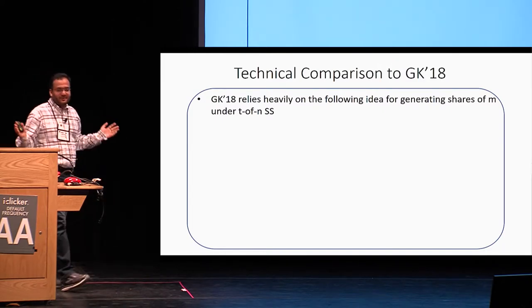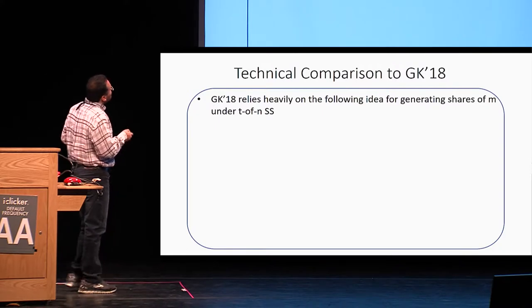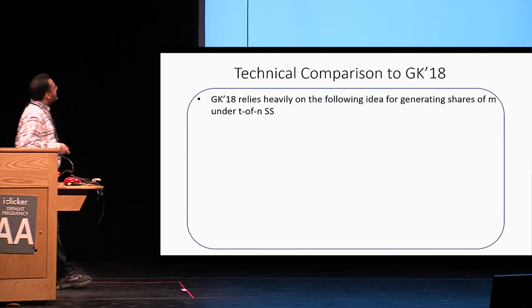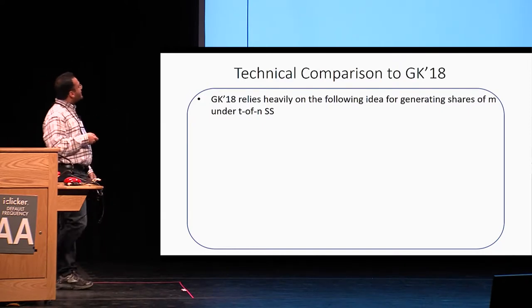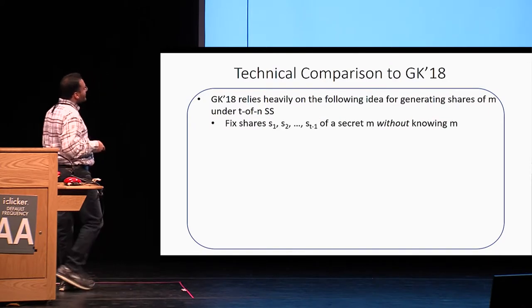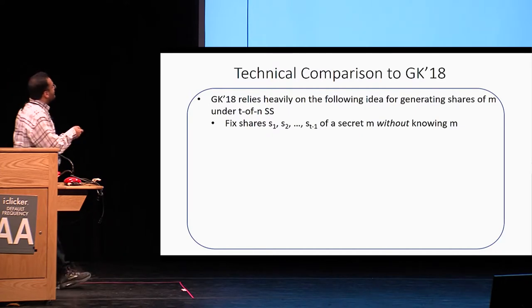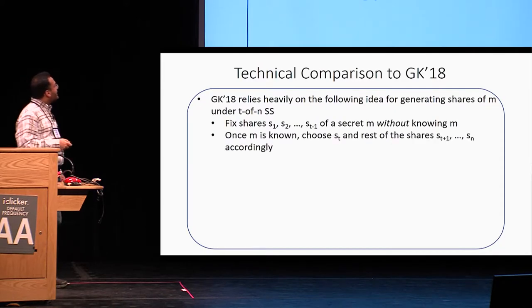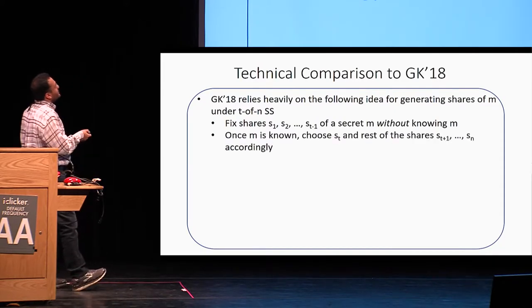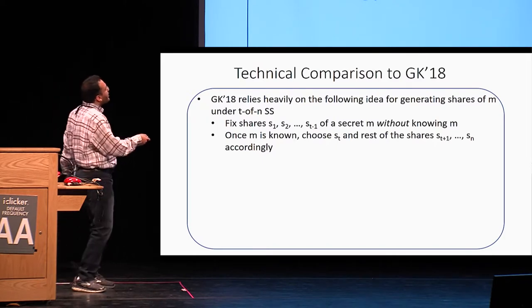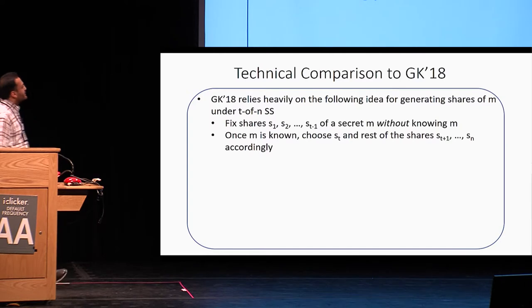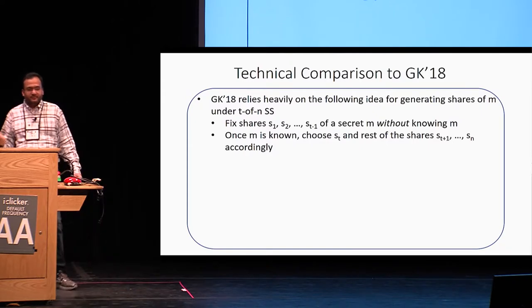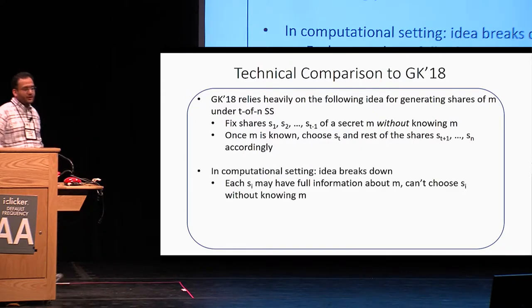Goyal and Kumar rely heavily on the following idea, used multiple times in their paper. For generating shares of message M under T-out-of-N secret sharing: first, even before the message is known, they fix T-minus-one shares S1 to S_{T-1}. Once the message is known, you choose the last share S_T and all remaining shares S_{T+1} to S_N accordingly — this still gives a valid T-out-of-N secret sharing of message M.